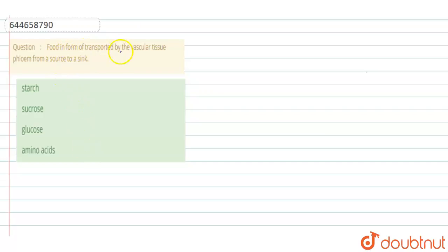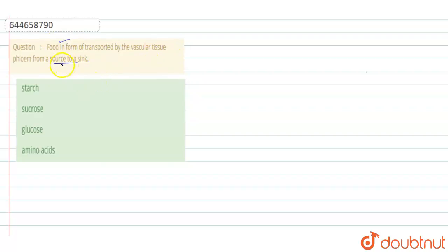The question here will be: food in the form of what is transported by the vascular tissue, flowing from source to a sink? So we have to find in which form food is transported by the vascular tissue from the source to the sink.